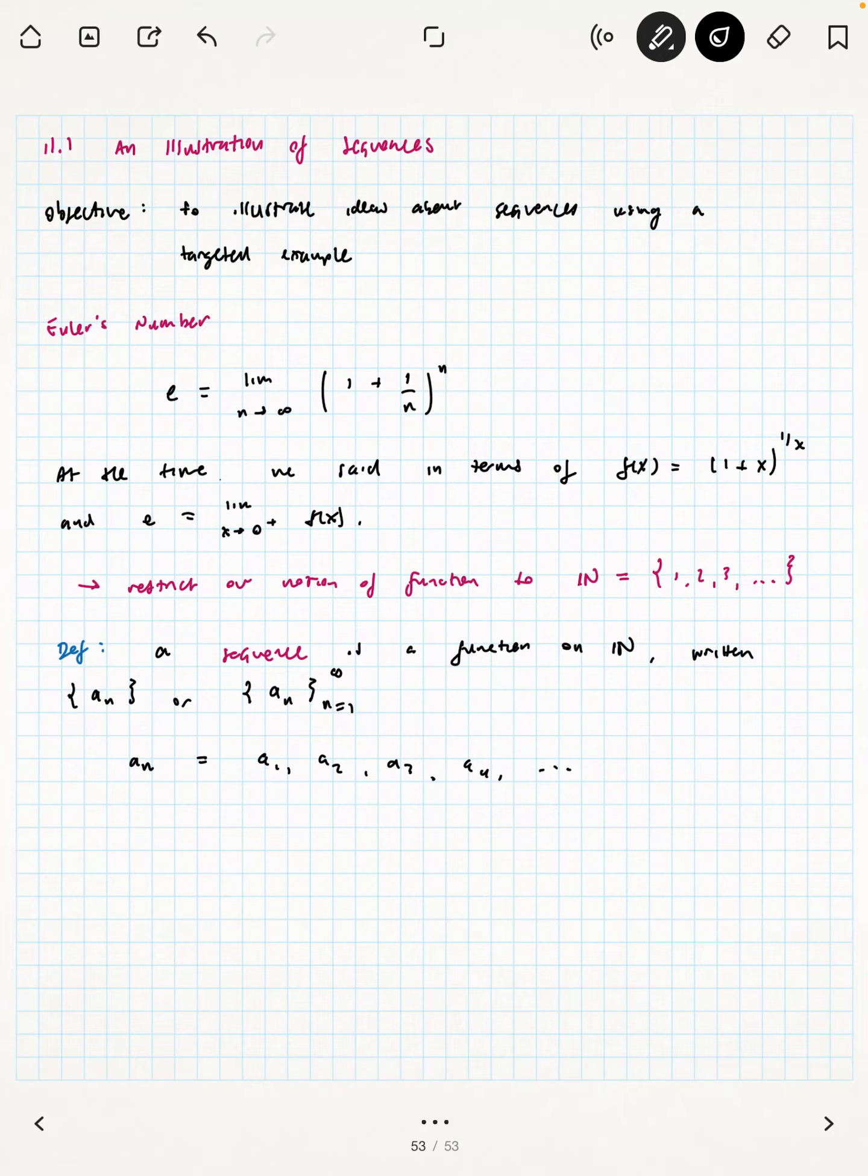The order matters here. We can't just think of them as a collection of objects. Part of this is that for every n, we have a corresponding term in the sequence a_n.